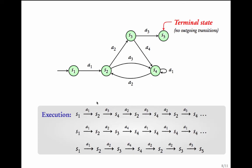An execution of the transition system is a sequence of transitions which is either infinite or it is finite and ends in a terminal state. Let us look at these example executions. S1 going to S2, S4, S2, S4, S4, S2, S4 and so on.